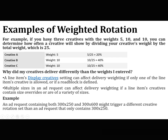For example of weighted rotation: if you have three creatives with weights 5, 10, and 10, you can determine how a creative will show by dividing your creative weight by the total weight of 25. So creative A with weight 5 gets 20%, while creatives B and C with weight 10 each get 40%. Why might a creative deliver differently than the weights entered? A line item's display creative setting can affect delivery weighting, and multiple sizes in an ad request — such as 300x250 and 300x600 — might trigger a different creative rotation set.